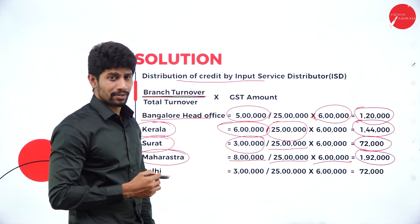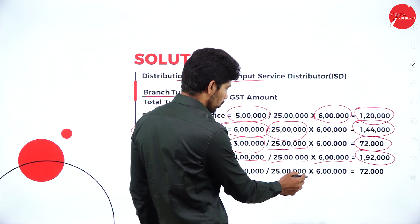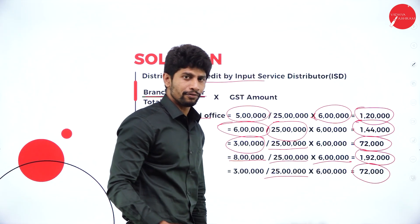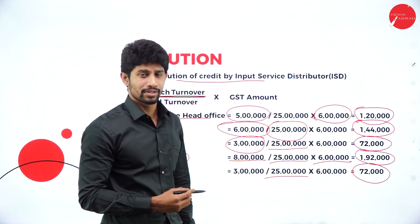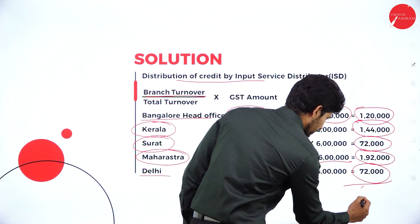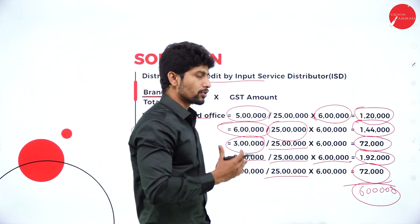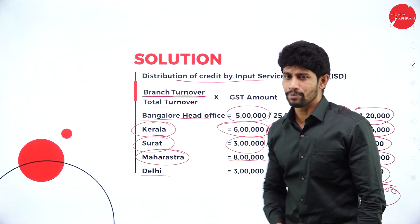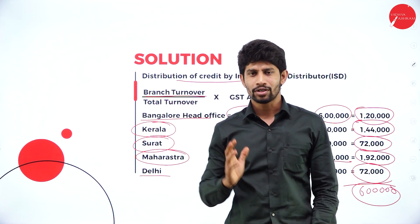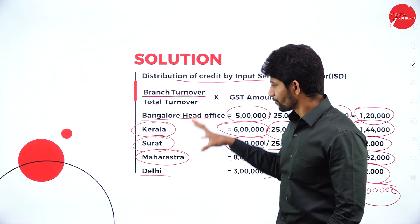Delhi branch: turnover is 3 lakh, so 3 lakh divided by 25 lakh into 6 lakh rupees of GST amount — Delhi branch will receive 72,000 rupees. To confirm whether you solved the problem correctly, just total all the amounts — you should get 6 lakh only. If you are getting 6 lakh, then the problem is solved correctly. This is how you distribute the GST amount which you paid for advertising or any kind of services as input. You receive that amount back from the GST authority and distribute it to your different branches based on each branch's turnover.